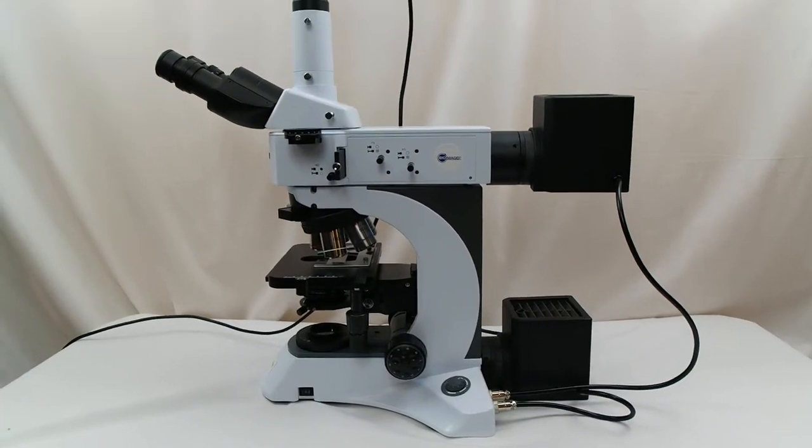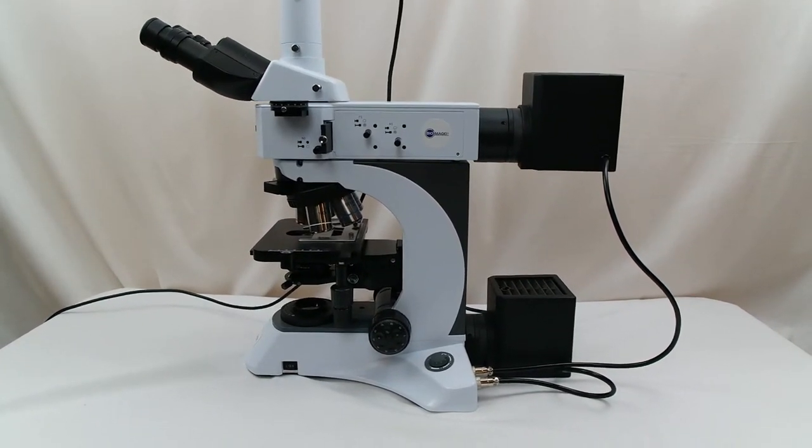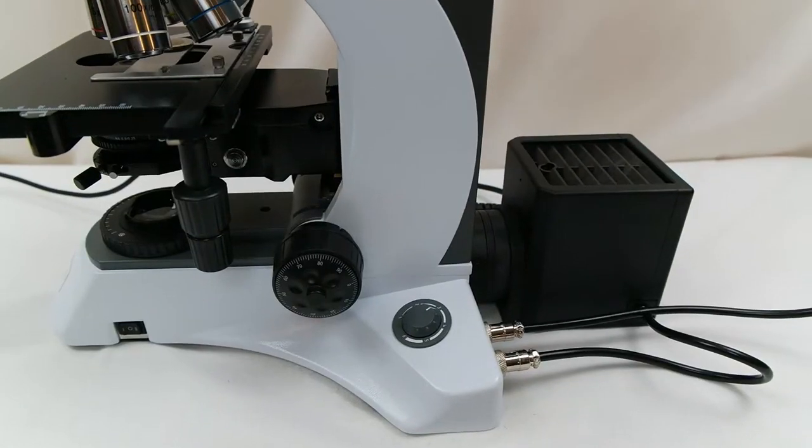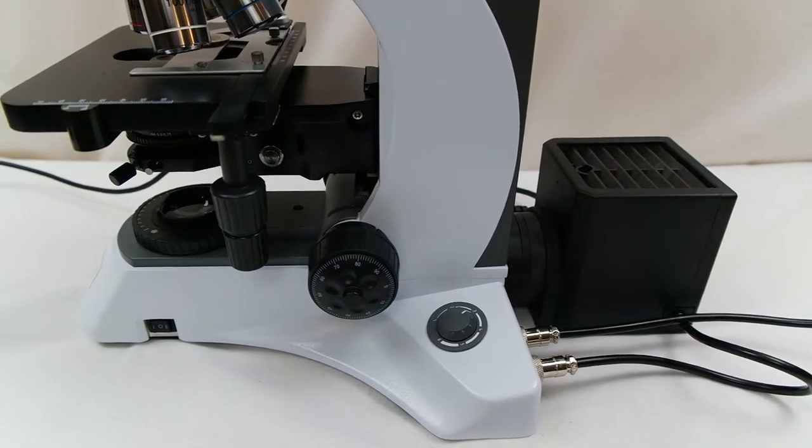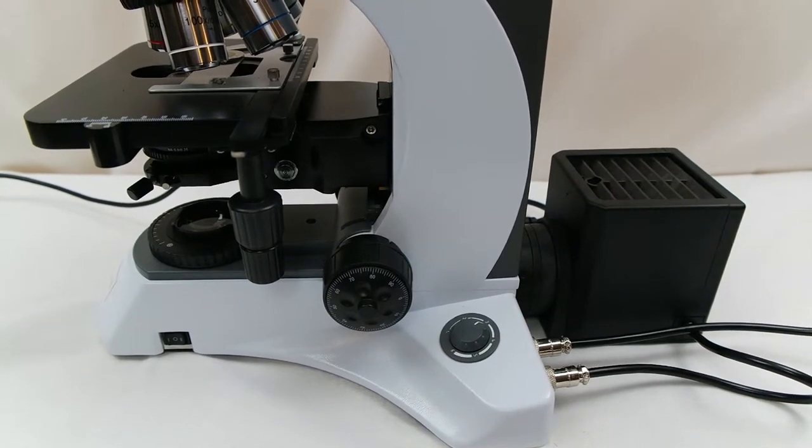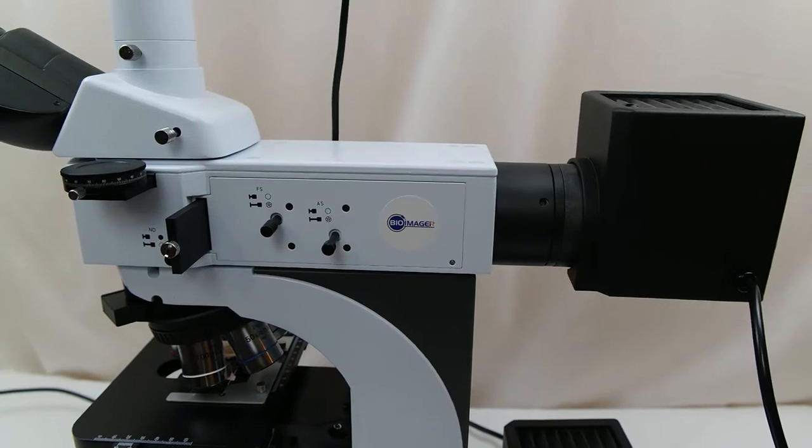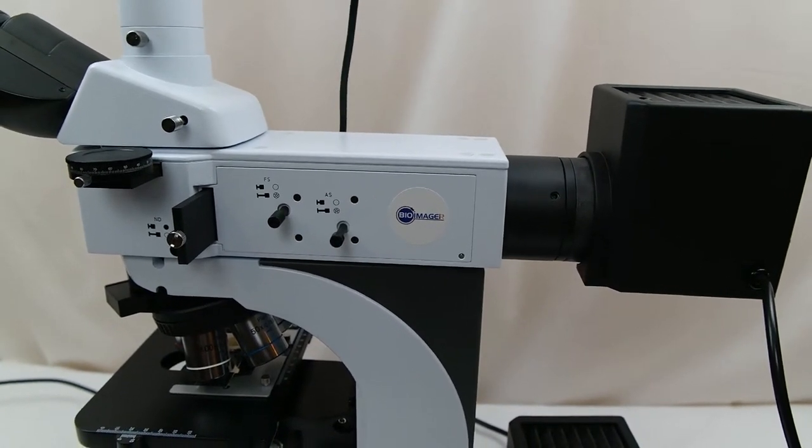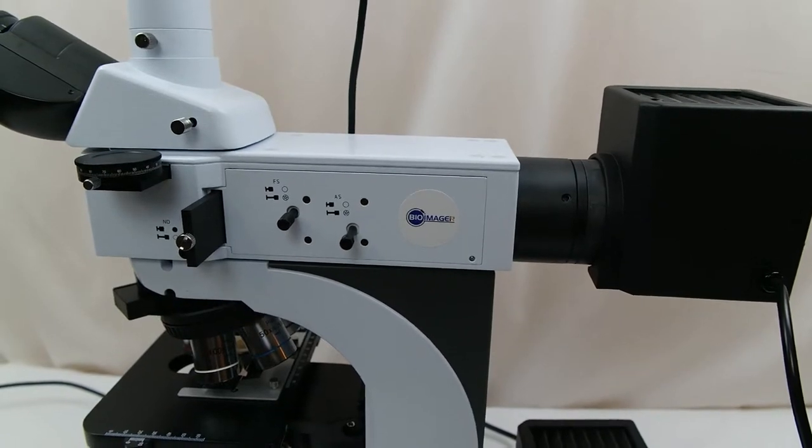This microscope has two light sources. Both are 100 watt halogen. The one at the bottom is for transmitted light and is normally used for transparent samples. The one at top is for reflection light and is used mainly for non-transparent or opaque samples.